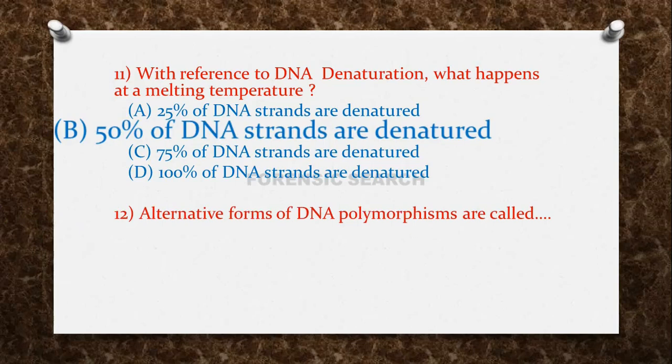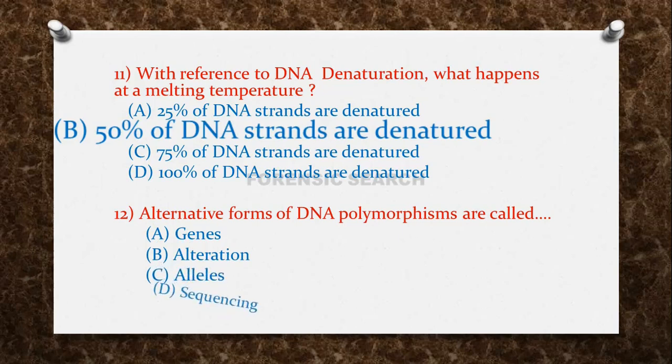The next question: alternative forms of DNA polymorphisms are called — Option A: genes. Option B: alteration. Option C: alleles. Option D: sequencing. The correct answer is option C — alternative forms of DNA polymorphisms are called alleles.